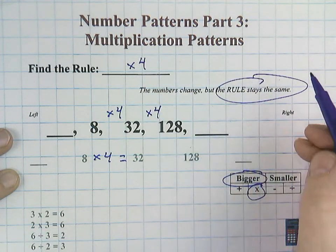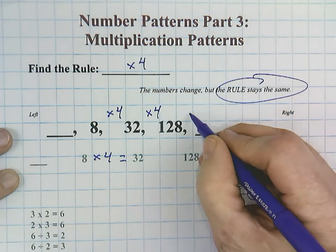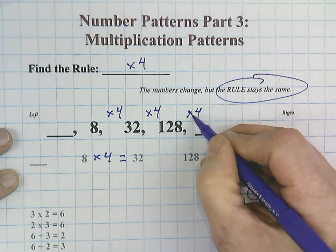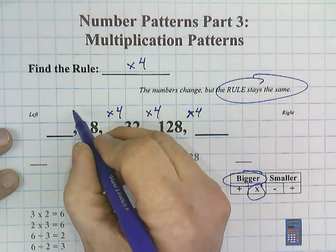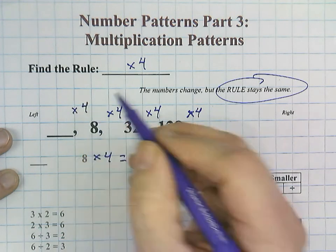Remember that when you do rules, it has to stay the same. It has to be consistent right across. So sometimes you could try adding here. But if it doesn't work, it means that's not the rule. It has to do it for every single set of numbers.